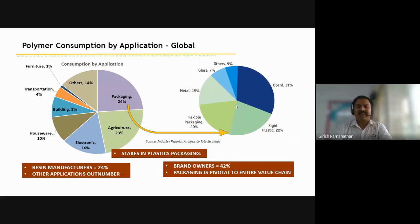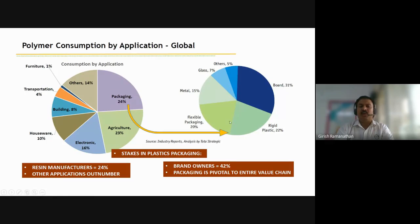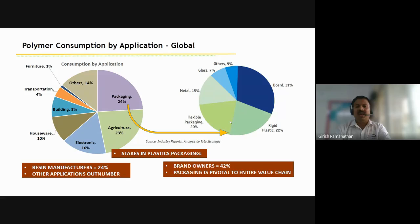Plastics have been used in various industries — packaging is one big industry, but also agriculture, electronics, and houseware. In packaging, we have metals, glass, and other materials, but flexible and rigid plastic packaging together constitute about 42 percent of the total packaging material used. This is a quite large share of packaging material used for packing various materials — foodstuffs and whatever we consume. The brands are responsible for choosing the material that goes into this.